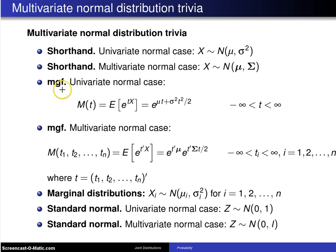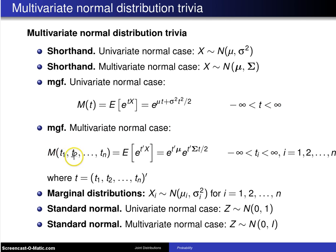The moment generating function for the univariate normal case was m of t equals the expected value of e to the tx, which equals e to the mu t plus sigma squared t squared divided by 2, for t from negative infinity to infinity. In the multivariate case, the joint moment generating function is m of t1, t2, up to tn, which equals the expected value of e to the t-prime x, where t-prime is as given. That equals e to the t-prime mu times e to the t-prime sigma t divided by 2, for all t sub i's between negative infinity and infinity.